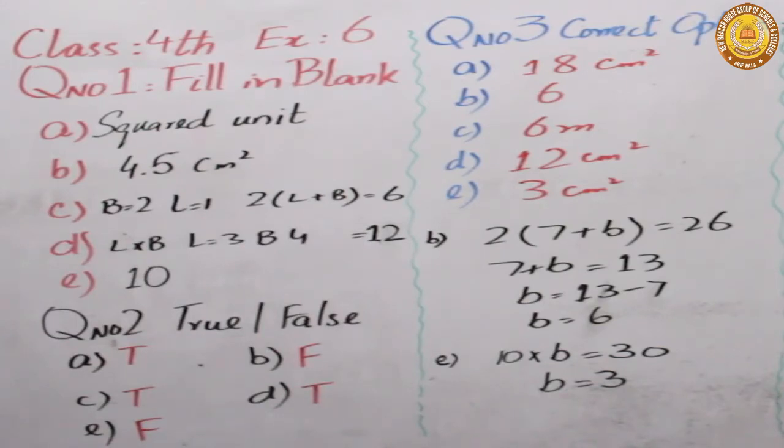We find the area, we find the length three and breadth four. If the formula is the length multiply by breadth, three multiply by four, answer twelve. E option, figure.